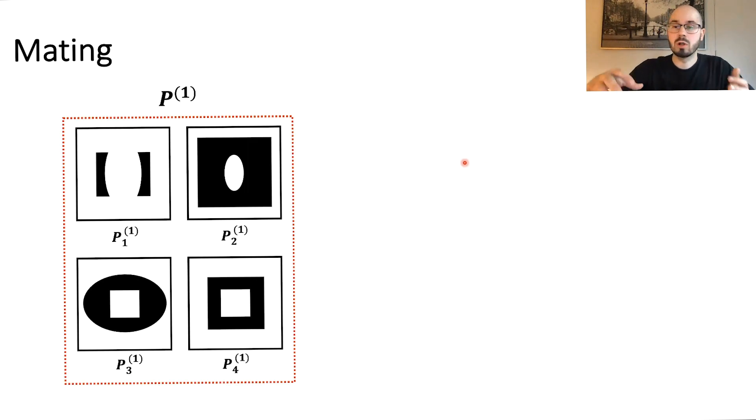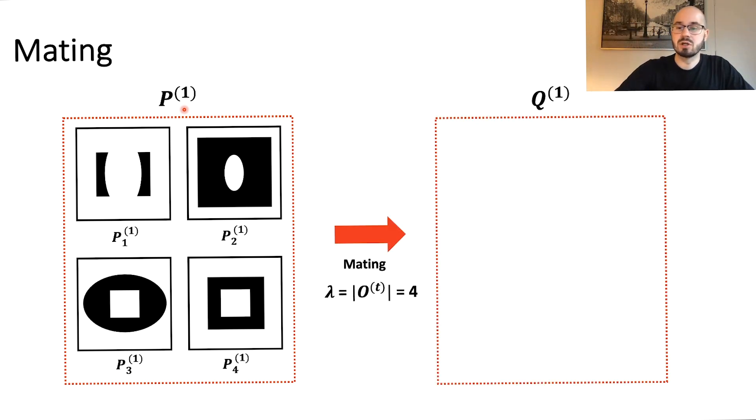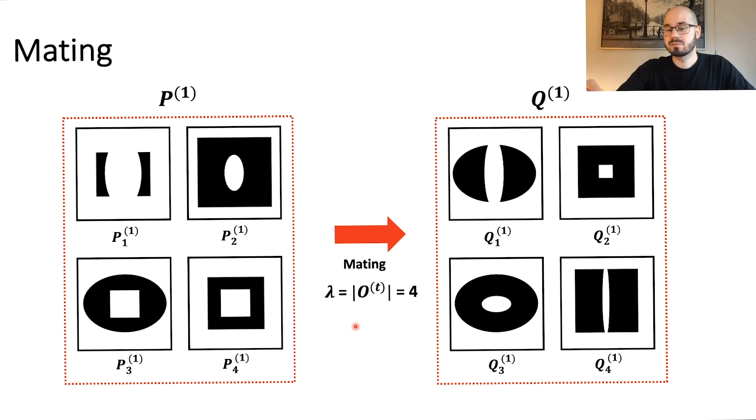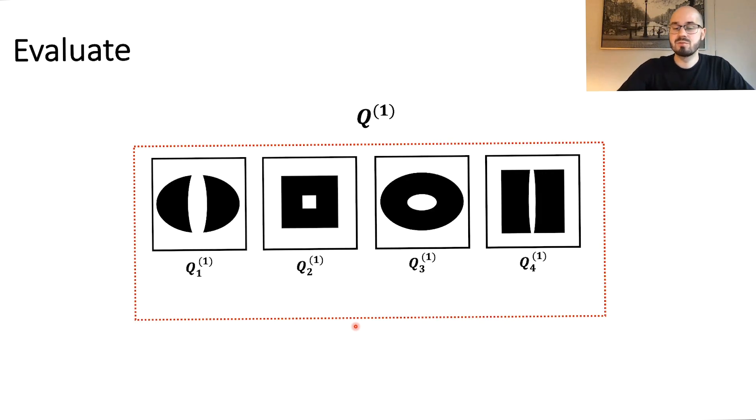So now let us look at the overall mating step. So we have a current population here p1 and we create a new offspring population q1. For this example I've set lambda or the size of the offspring population to 4. Which means the steps I've shown you on the last slides, the selection, the crossover and the mutation, they are repeated to create new offspring and fill up the q of one population. So at some point our population will have exactly lambda individuals and then they need to be evaluated on our error function.